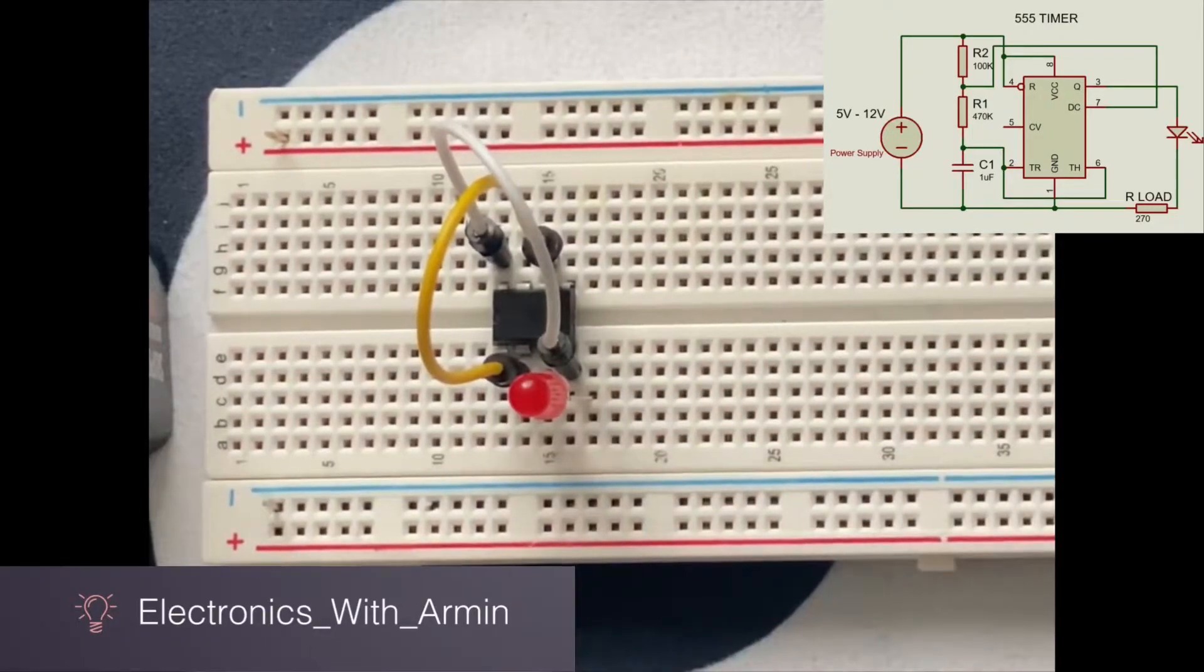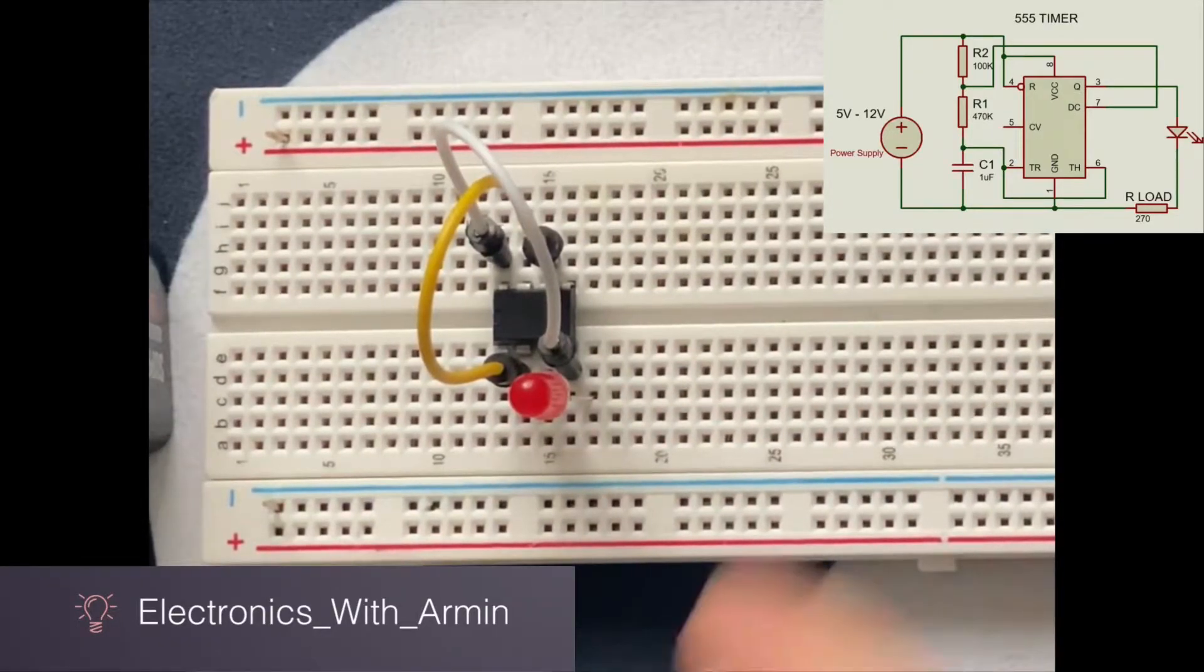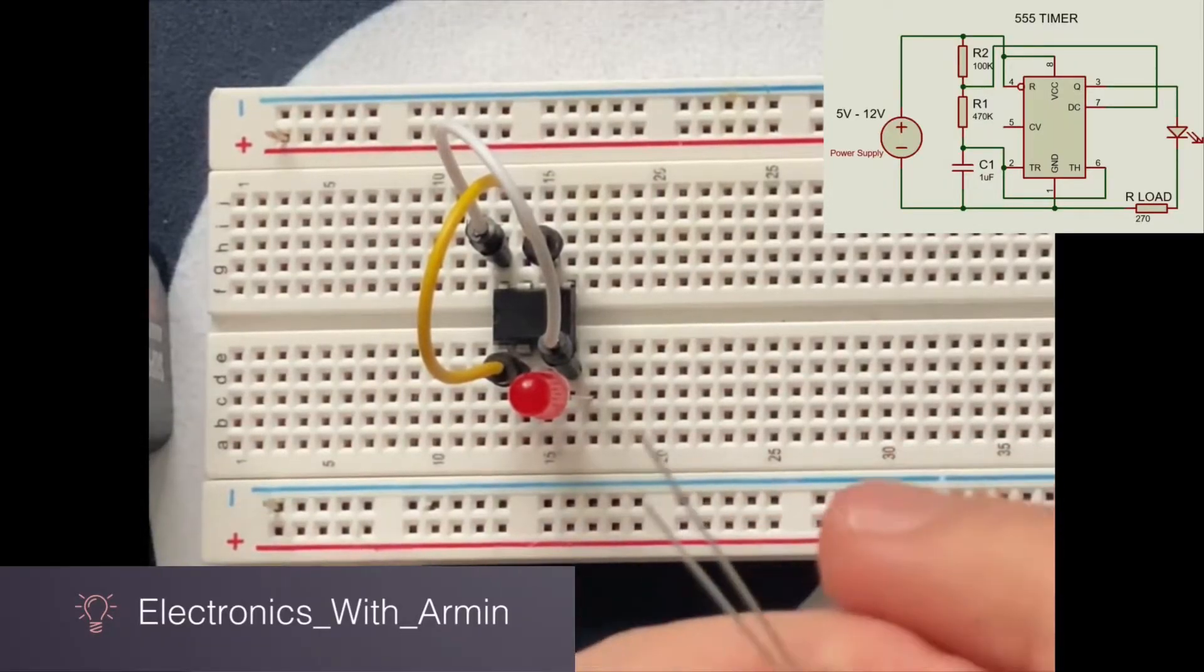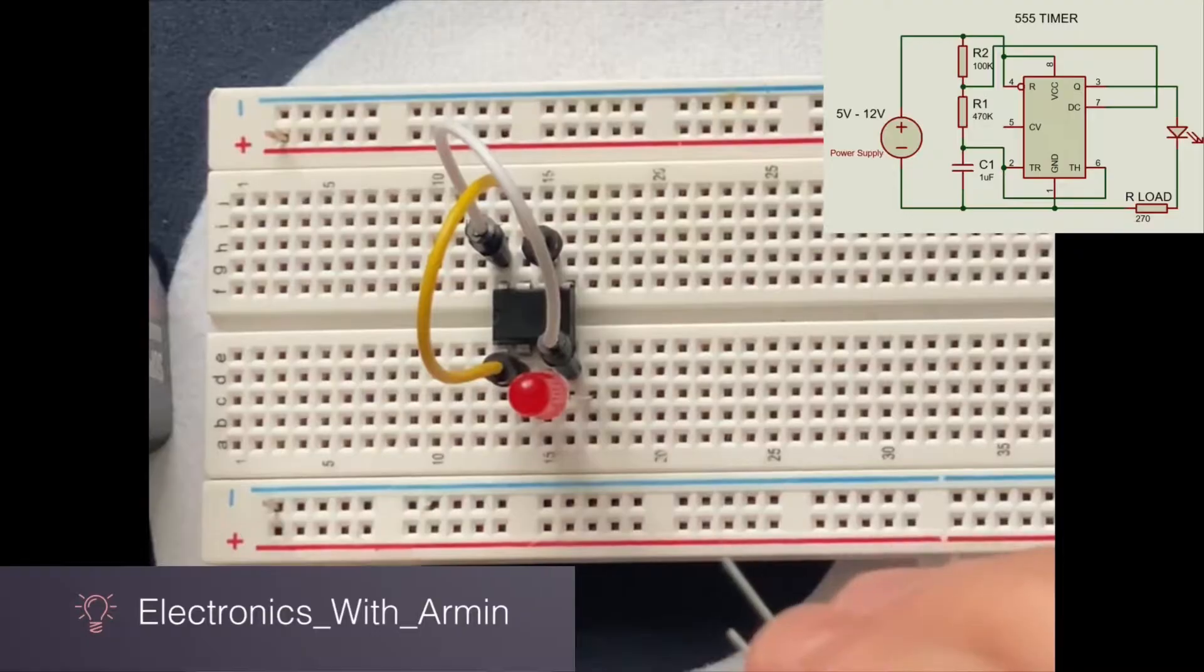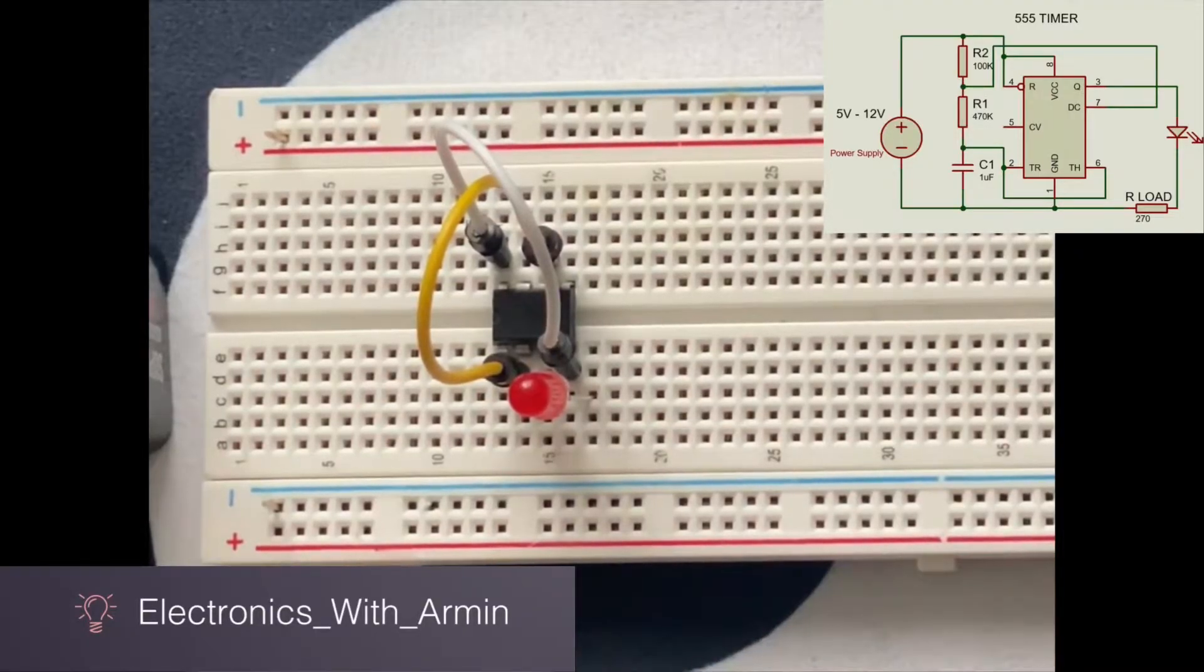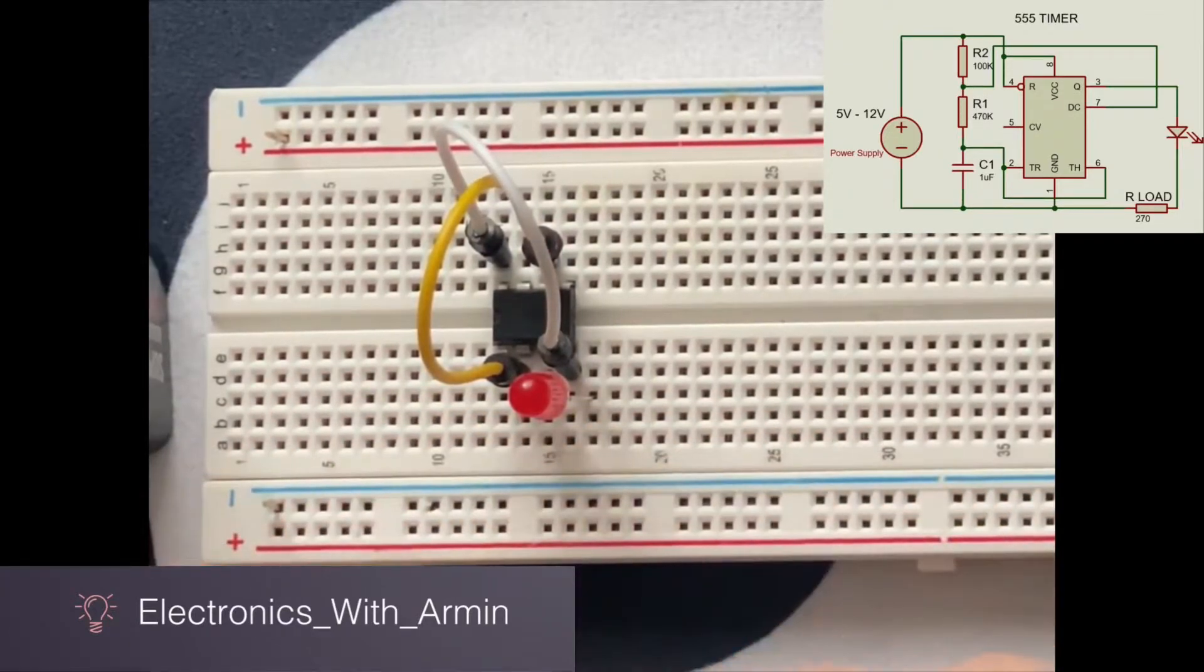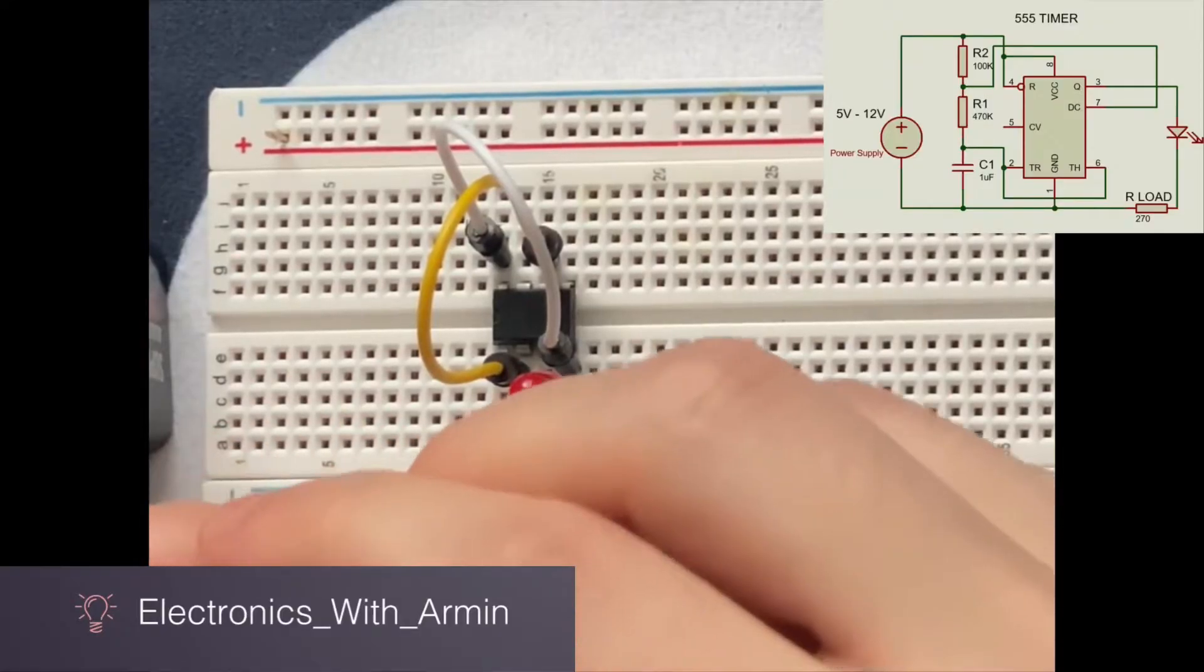Then I'm going to connect my capacitor. Same as the LED, the longer leg on the capacitor is always the anode or positive. According to the diagram, the cathode has to be connected to pin 1 and the anode has to be connected to pin 2. So the longer leg, which is our anode, has to be connected to pin 2 and the shorter leg to pin 1.